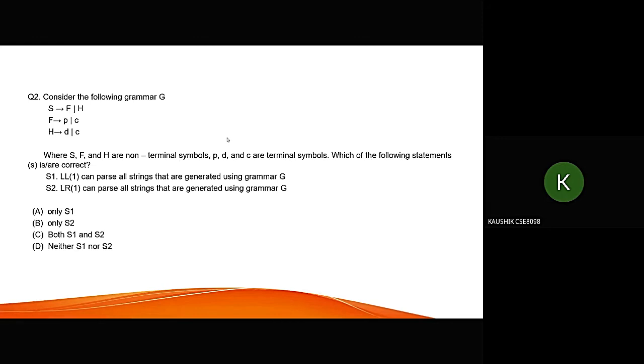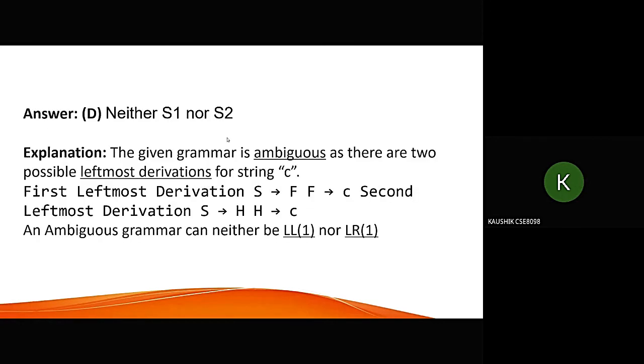Consider the following grammar G, where S, F, and H are the non-terminal symbols, P, D, and C are terminal symbols. Which of the following statements is correct? S1: LL1 can parse all strings that are generated using the grammar G. S2: LR can parse all strings that are generated using grammar G. Now explain this question. Given grammar is ambiguous, since string C can be generated in two ways. An ambiguous grammar can be neither LL nor LR. Since every LL and every LR grammar is unambiguous, the answer is either S1 nor S2 is correct.